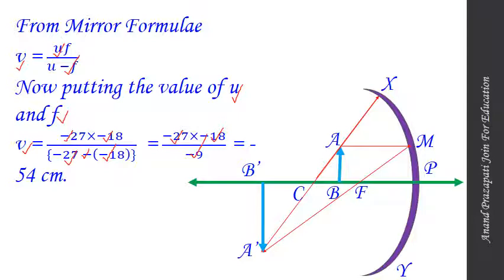Cancelling out, we get 18 in the numerator simplification. Therefore, the image distance, which equals PB', after the calculation is minus 54 cm.